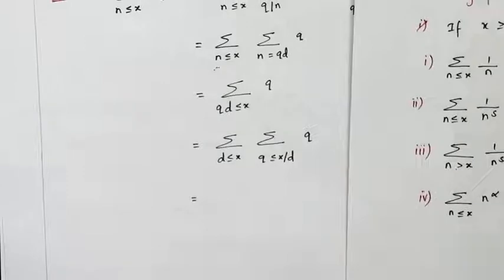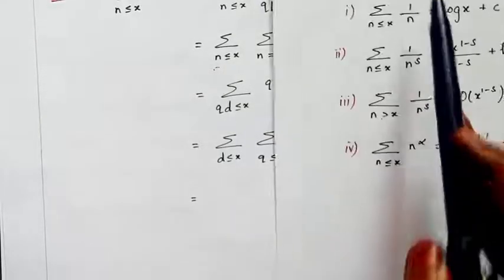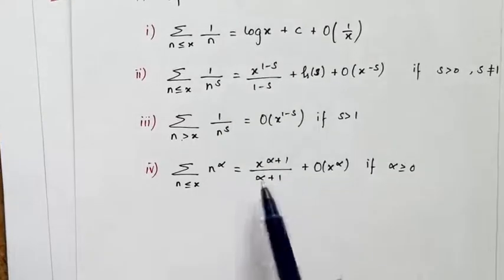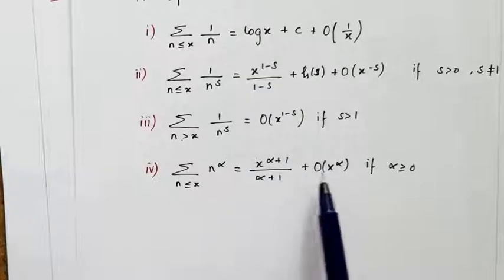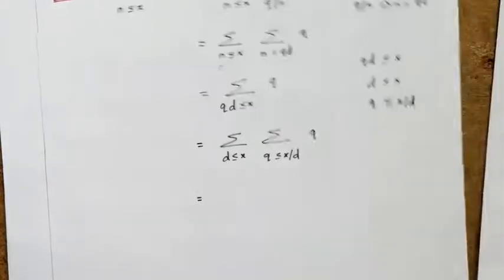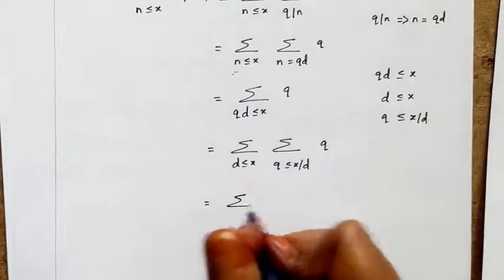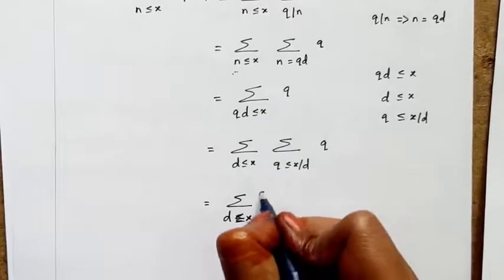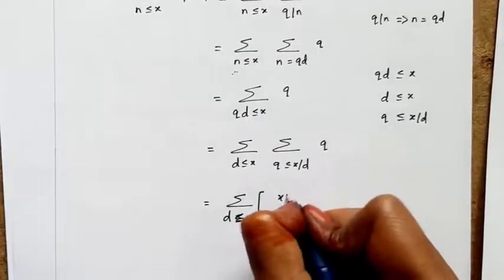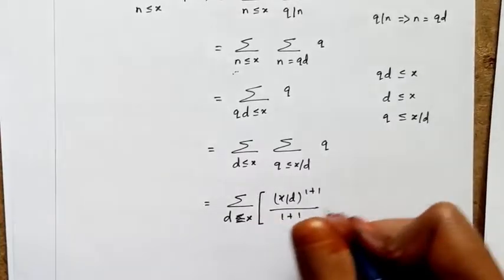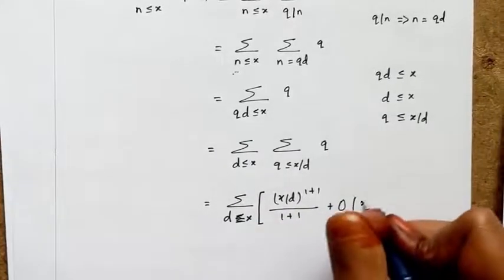For the inner sum over q ≤ x/d of q, I use the fourth formula — sum of n ≤ x of n^α = x^(α+1)/(α+1) + O(x^α) — with α = 1. Replacing x by x/d, I get sum over d ≤ x of: (x/d)^2/2 + O(x/d).